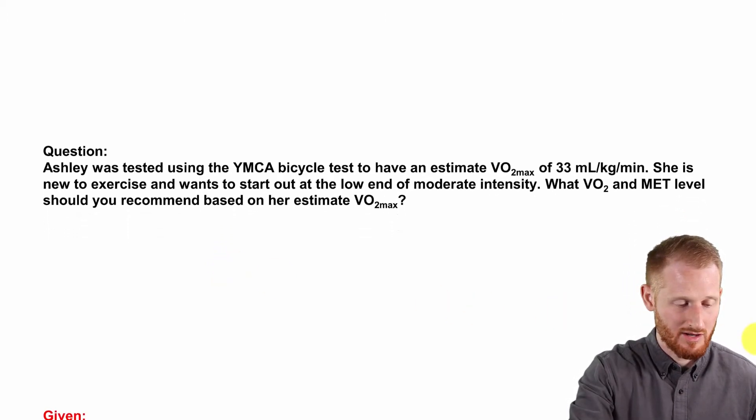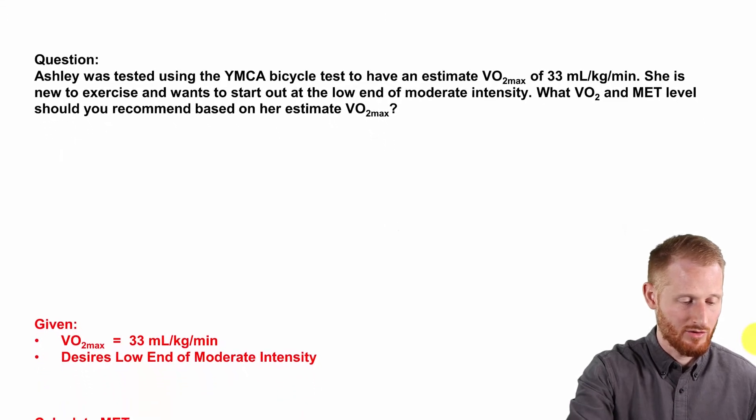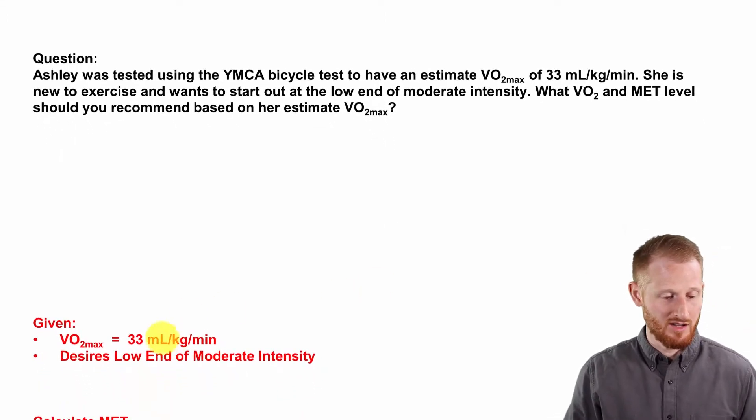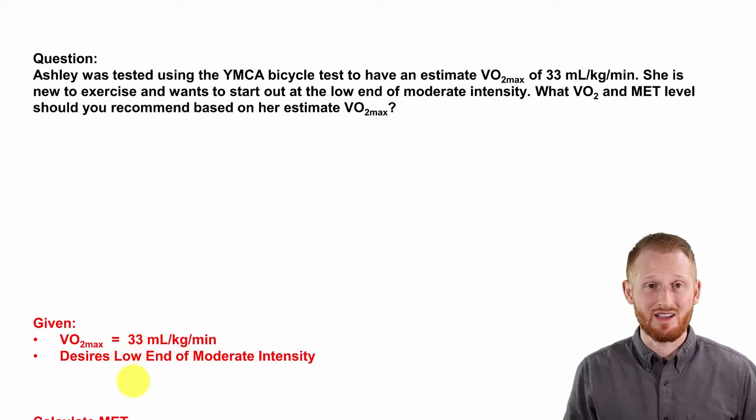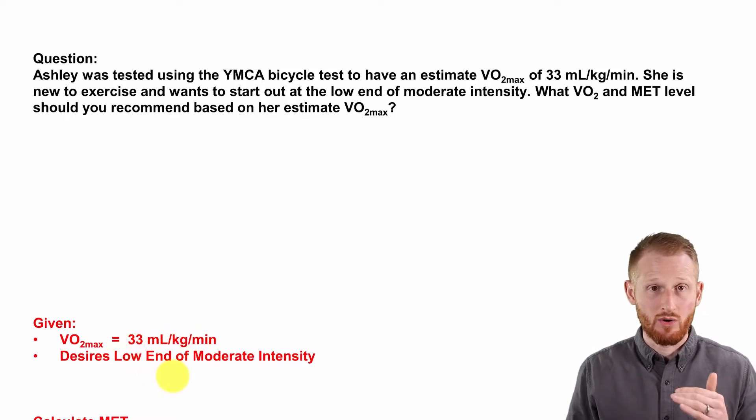All right, so let's look at our given variables here. We have a VO2 max of 33 mLs per kilogram per minute and a desired exercise intensity that is the lower threshold for moderate intensity exercise.